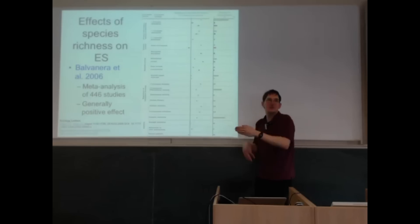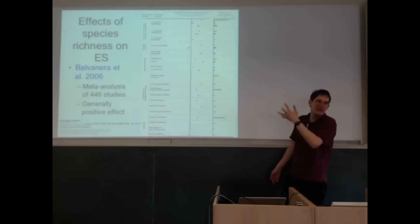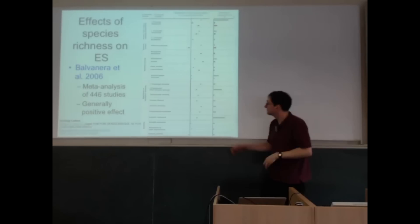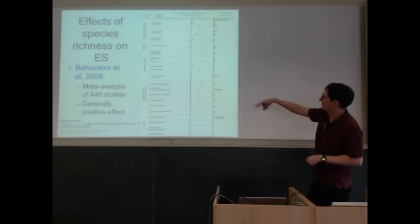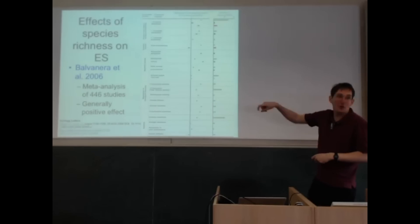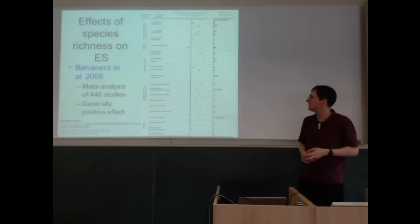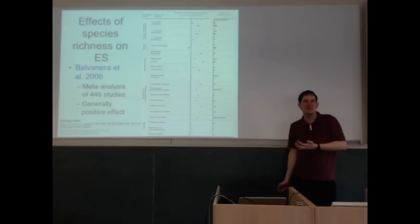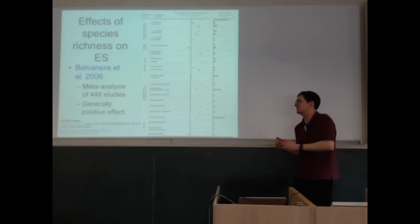Functional biodiversity tends to be more important than species richness per se. A meta-analysis of 445 studies — which looked across existing studies at the balance of evidence — supports this. There are now also newer papers out as well.